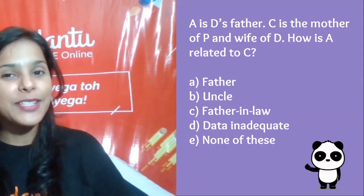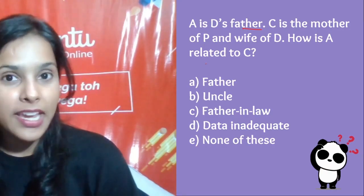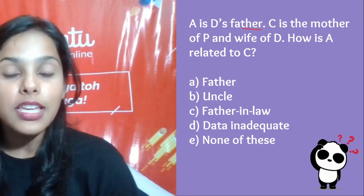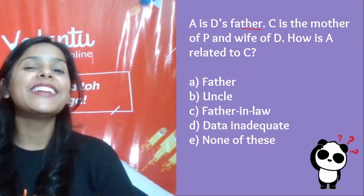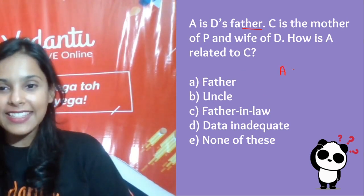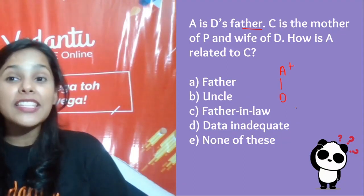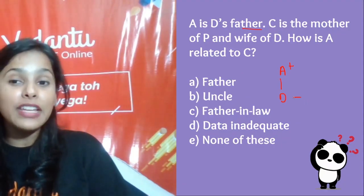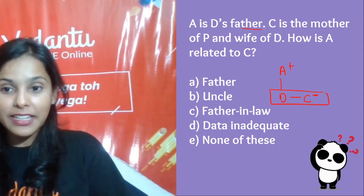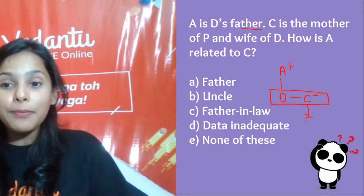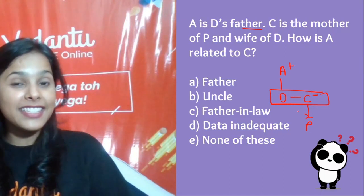Last question: A is D's father. C is the mother of P and the wife of B. How is A related to C? A is D's father — so here is D. C is the wife of B — put them in a box. P is the child of C, as she is the mother of P.